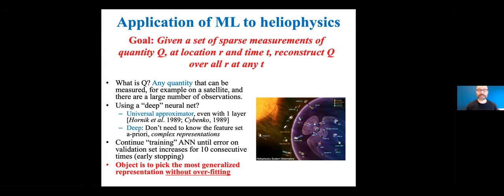And the goal statement here is given a sparse set of measurements of any quantity Q. For this talk, we'll talk about plasmospheric density, number density, electrons per cubic centimeter. But Q can be essentially anything that you measure on a satellite. And so you have this at a location R at a time T, you want to reconstruct this quantity Q over all R at a specific point in time T. So that's what we're going to do.